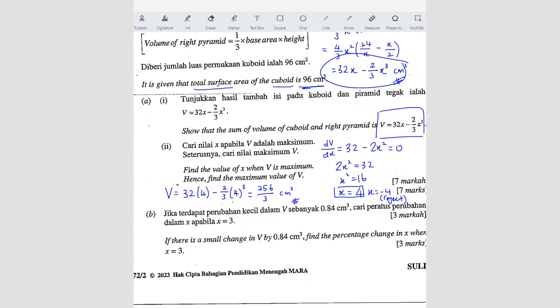Now question B. If there is a small change in V... small change means what? Small change or approximate change, same thing. So that means it's ΔV. So ΔV is 0.84. That's the small change. Find the percentage change. Forget about percentage first. They asked for change in x, so that means they're looking for Δx. We ignore the percentage, we find the percentage later. Find Δx first.